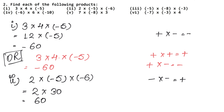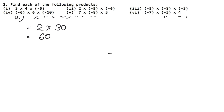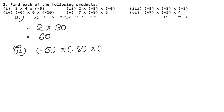In multiplication, you can first multiply two of them and then multiply the third digit, or multiply a different pair first — the answer will be the same. In the third part: minus 5 into minus 8 into minus 3.